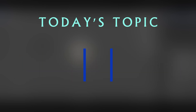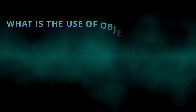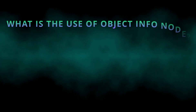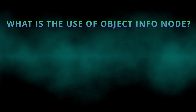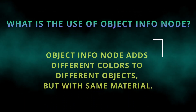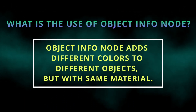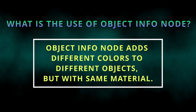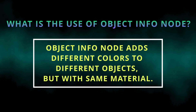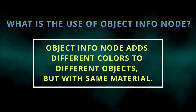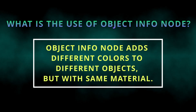The first question before starting anything is: what exactly is the use of this Object Info Node? The Object Info Node is used to add different colors to different objects while you are still using the same material.